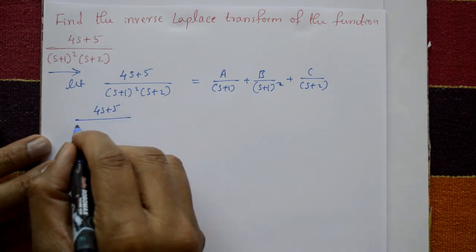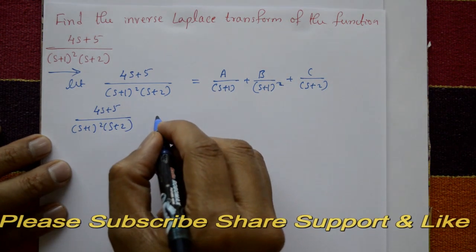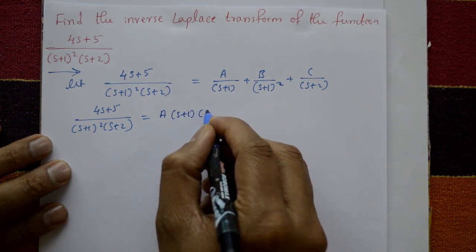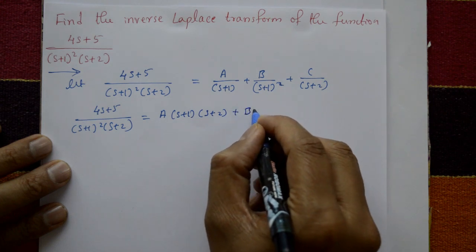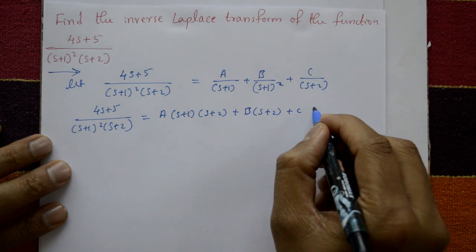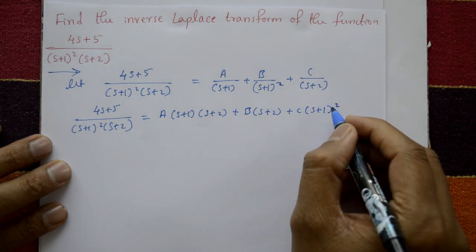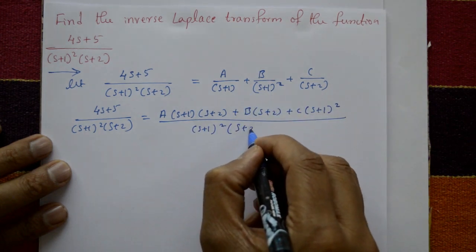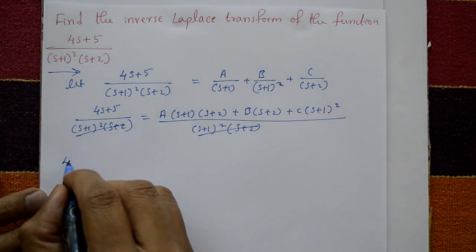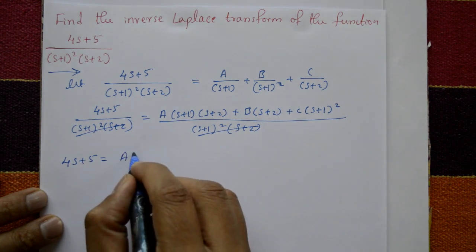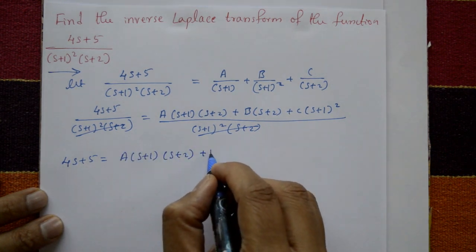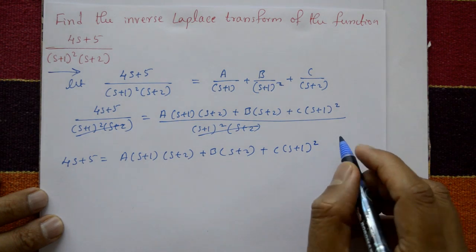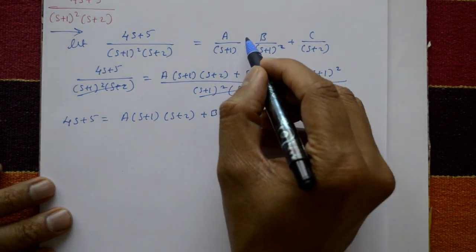So (4s + 5) upon (s + 1) whole square into (s + 2) equals A into (s + 1) into (s + 2) plus B into (s + 2) plus C into (s + 1) whole square, all divided by (s + 1) whole square into (s + 2). Cancel both sides, so only: 4s + 5 equals A(s + 1)(s + 2) plus B(s + 2) plus C(s + 1) whole square. Now find A, B, C values and substitute, then use the inverse formula.